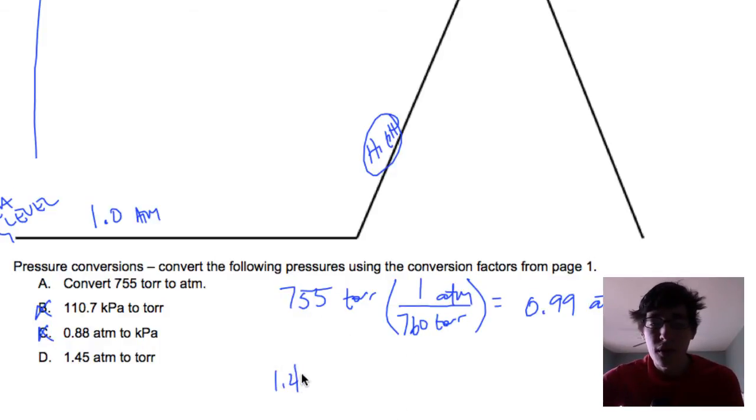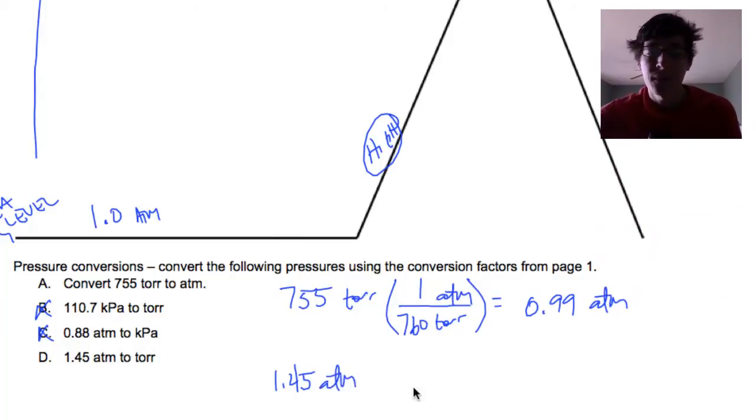And then going the other way, 1.45 atmospheres converted to torr. We're going to be multiplying by the torr this time, over one, that cancels, and we end up with 1102, I think 1102 torr. So conversions are very simple.